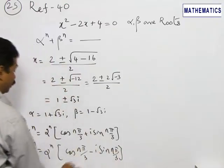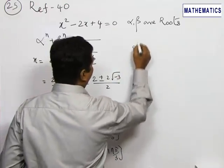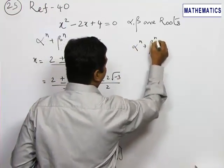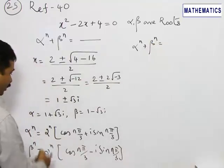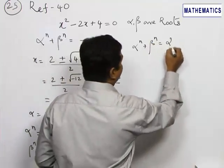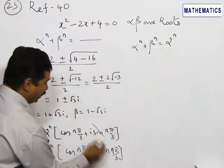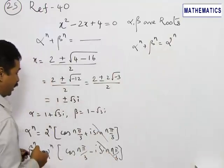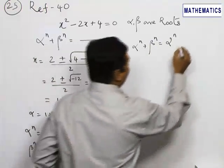When we add α^n + β^n together, 2^n will be a common quantity and the i sin terms will be eliminated. cos(nπ/3) + cos(nπ/3) will be 2cos(nπ/3).